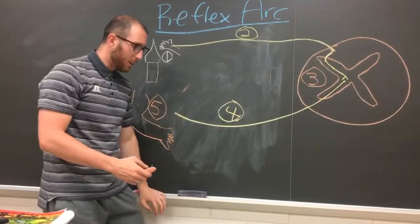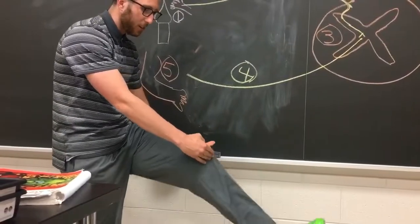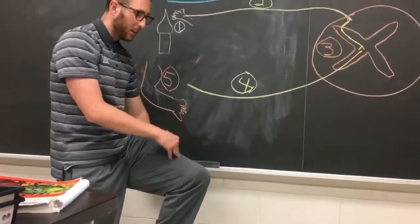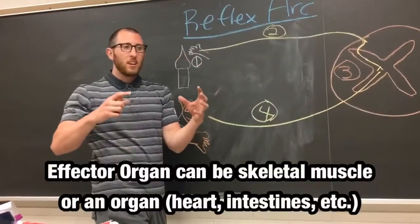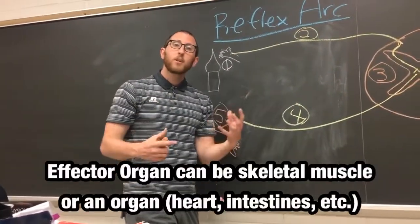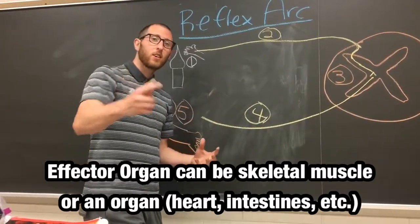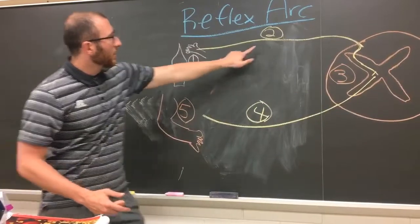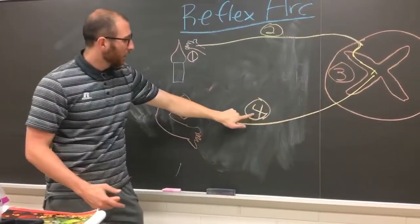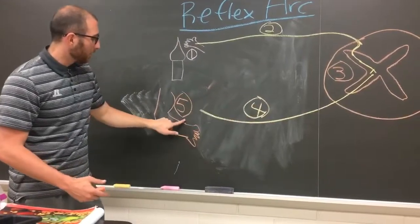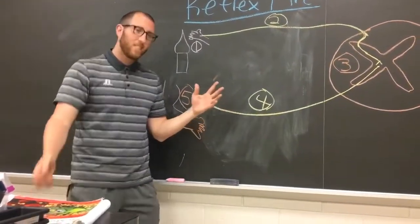The effector organ could also be your quadriceps — when you stretch them and they contract to move. An effector organ can be a muscle, or it can be something like your heart or your lungs. Make sure you know all five different parts of a reflex arc. Stay calm!